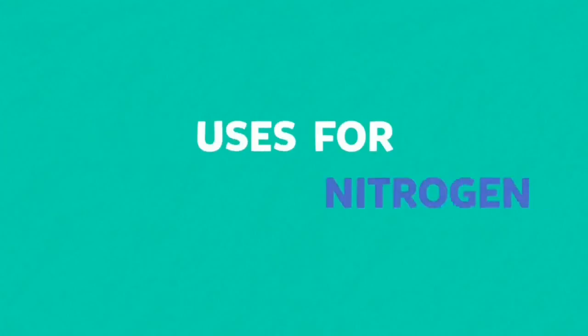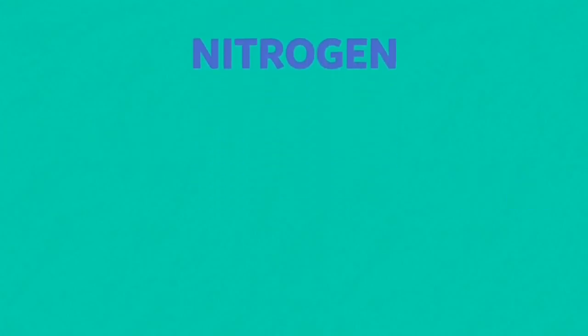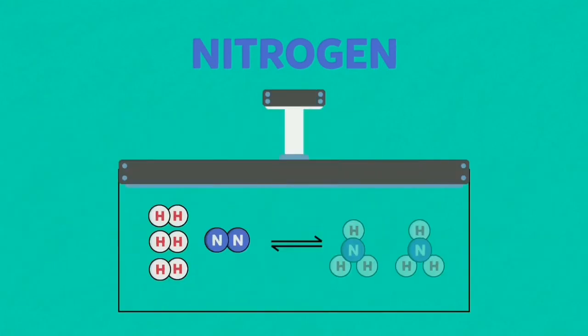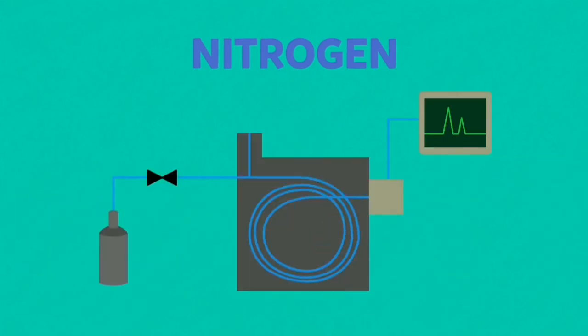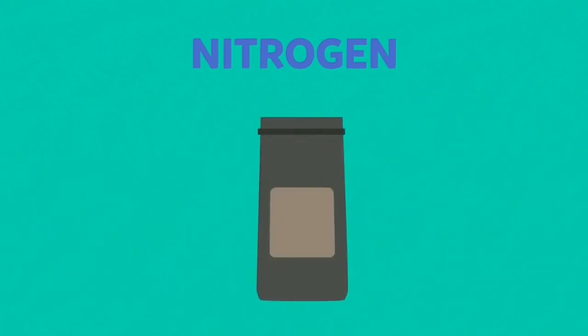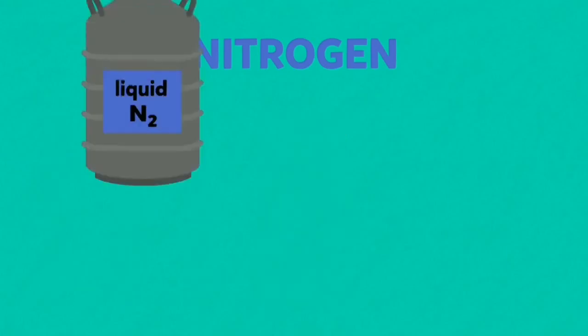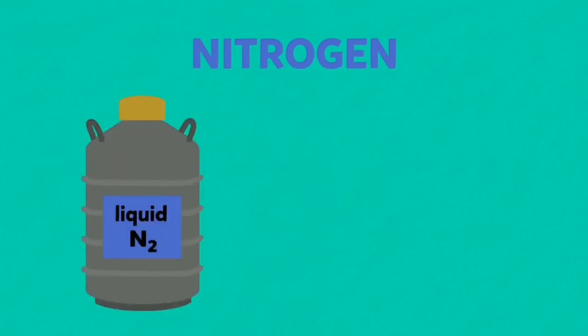Now, the important uses for nitrogen are creating an inert atmosphere for chemical processes, the Haber process for the manufacture of ammonia, gas chromatography, packing oxidizable foods such as ground coffee, and also liquefied nitrogen can be used for the freeze drying of food and preservation of tissue samples.